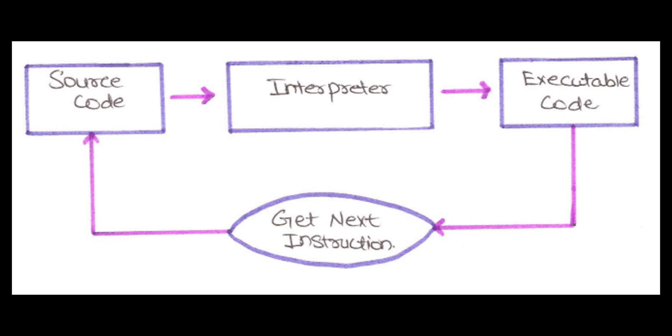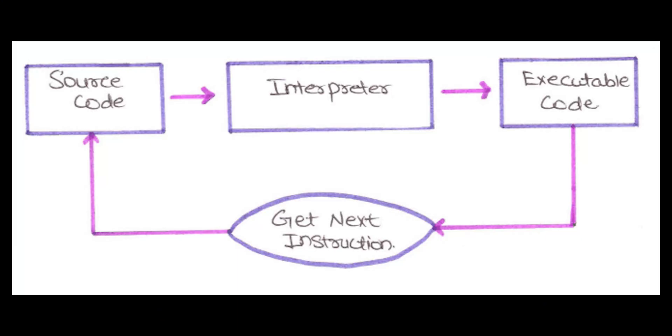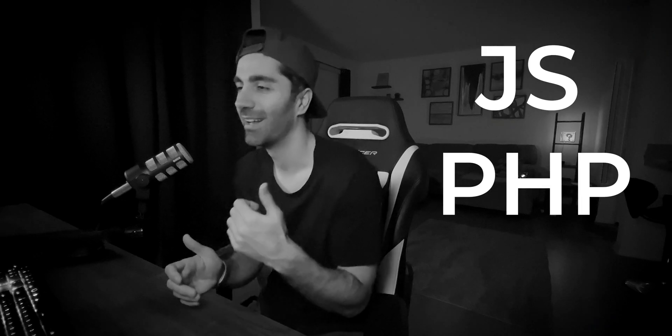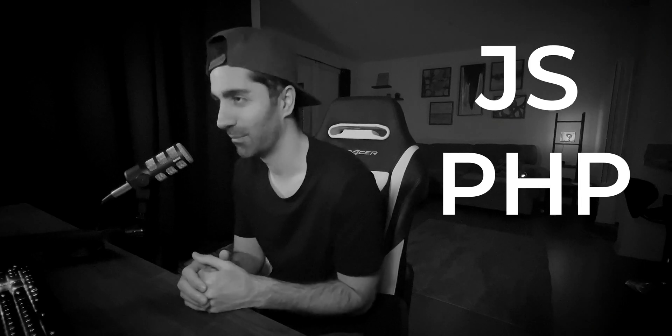Interpreted languages are going to be slower than compiled languages. With a compiled language, it's an executable in machine code — the computer can just run it as is. With an interpreted language, as the program is running, it's translating and executing, translating and executing, so it is slower. Common interpreted languages are JavaScript and PHP.